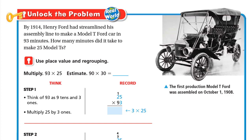So here we have 93 minutes for one car, so for 25 cars we have to multiply 93 by 25. First let's estimate. 93 rounded to the nearest 10 — the digit to the right of the 9 is 3, which is a weak digit, so we keep it 90. 25 rounded — the digit to the right of 2 is 5, a strong digit, so it becomes 30. So 90 times 30: we write the two zeros in the product and the question becomes 9 times 3, which is 27, so the estimate is 2,700.